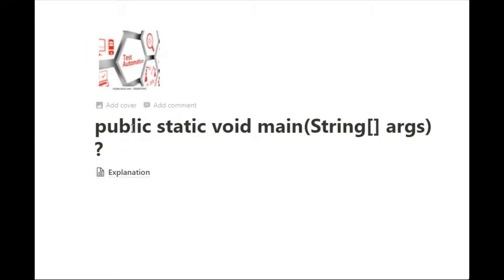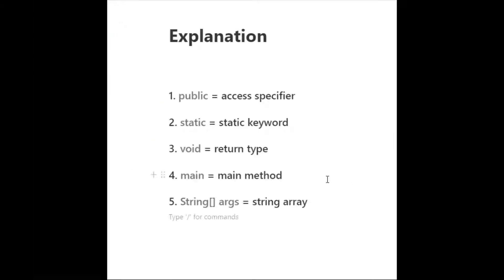We'll look at what happens if we remove `public` and write `private` instead, what if we remove `static`, what if we change the return type to something other than void, and what if we remove the argument. Let's get started with defining each keyword used in the main method.